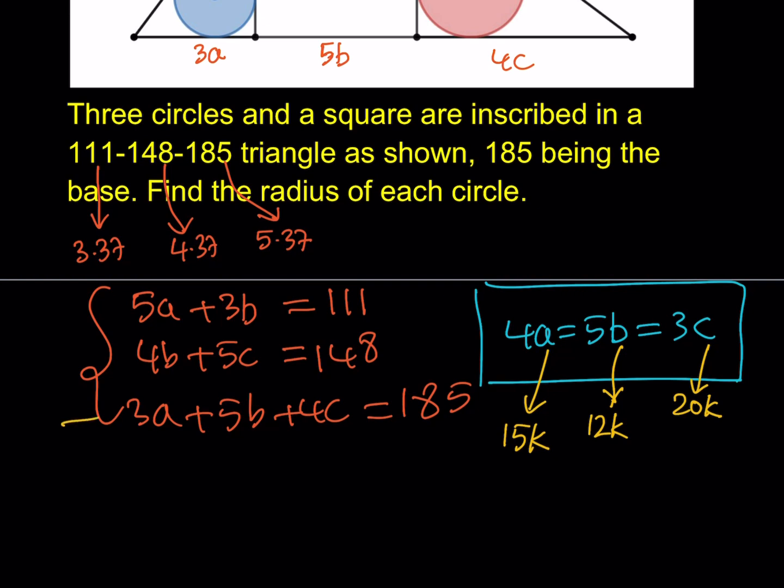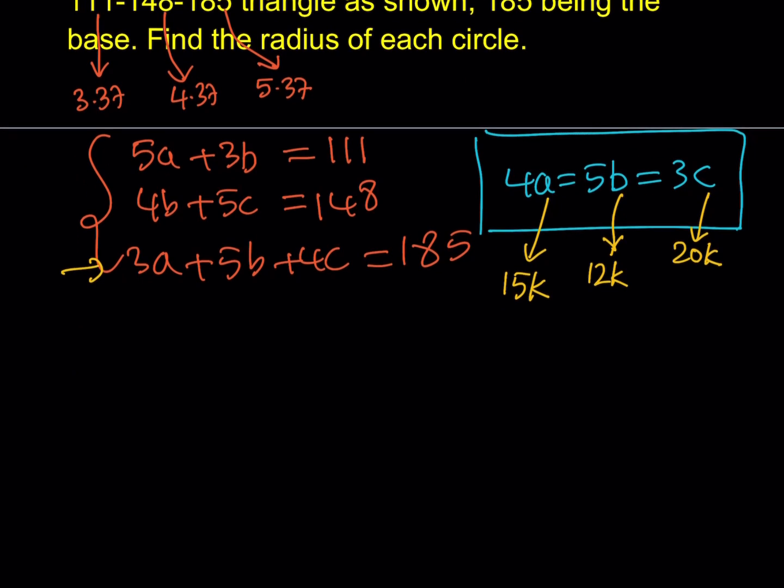So, let's go ahead and use the third one, and substitute these values into that. So, 3A, since A is 15K, it's going to be 45K. Be careful here. 5B, B is 12K. 5B is going to be 60K. And, C is 20K. 4C would be 80K. And, they all add up to 185.